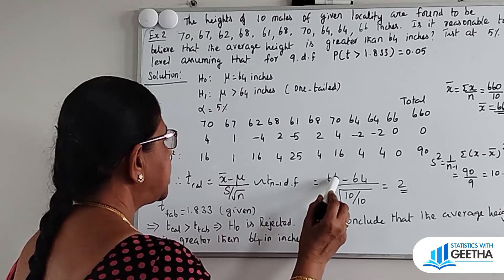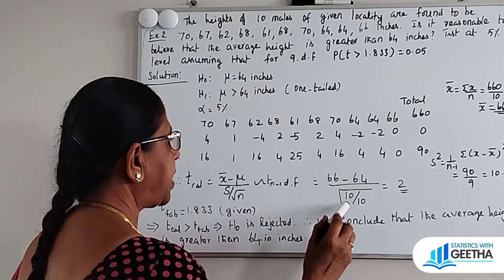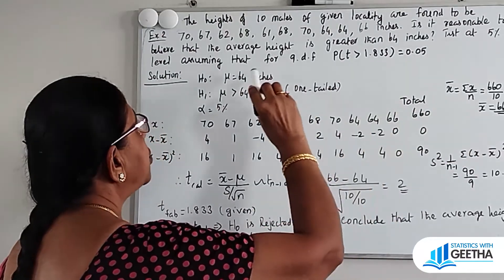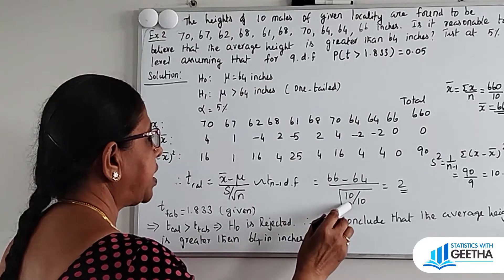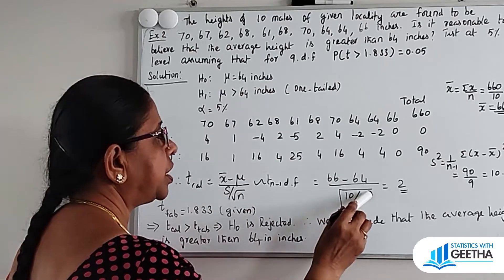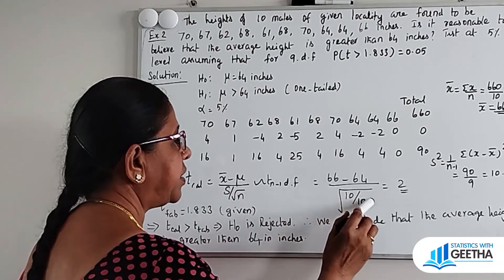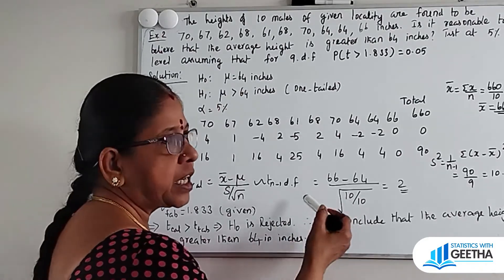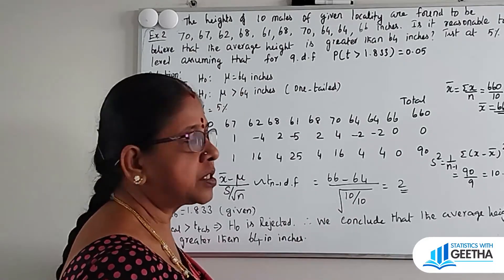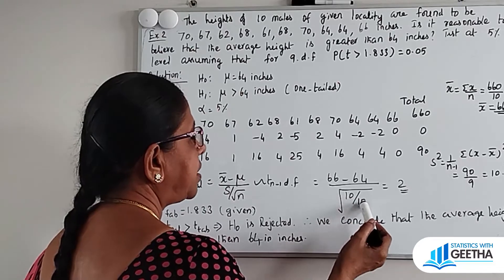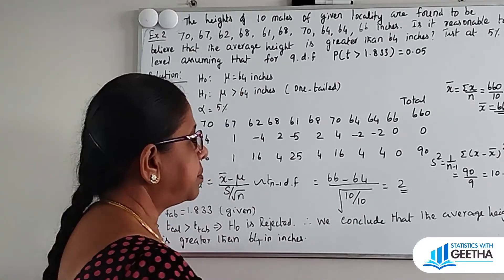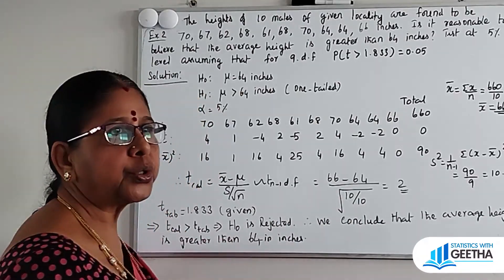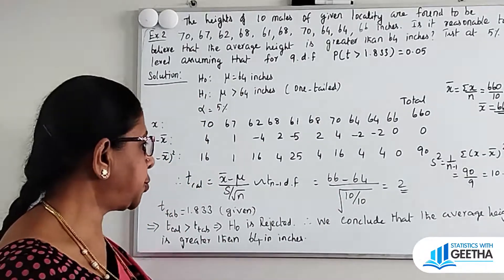Substituting: 66 minus 64 divided by root 10 divided by root 10. The denominator simplifies: root 10 divided by root 10 equals 1. So 66 minus 64 equals 2, and T calculated value equals 2.